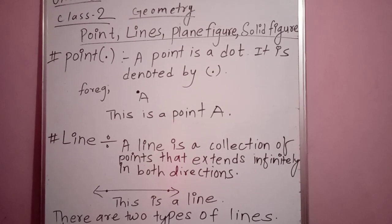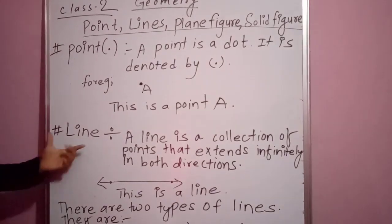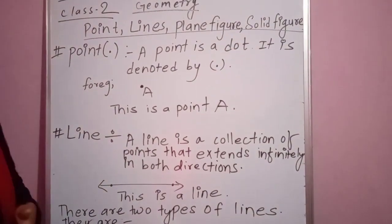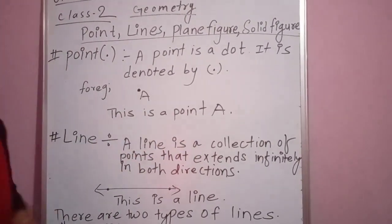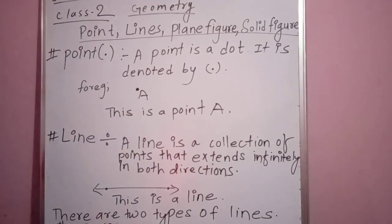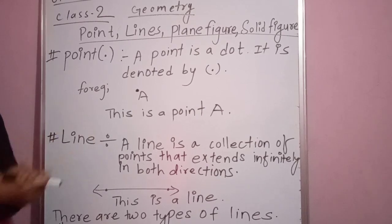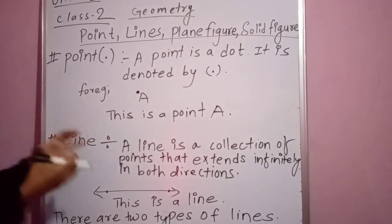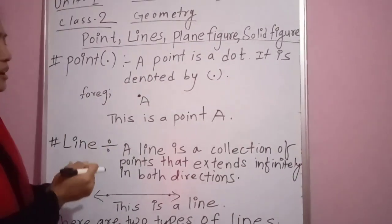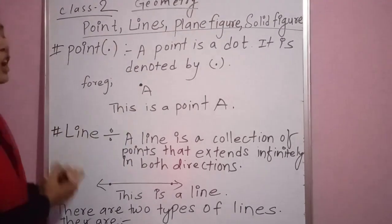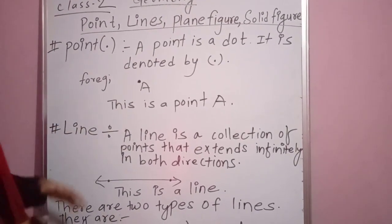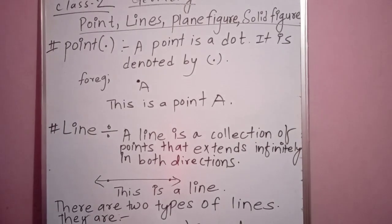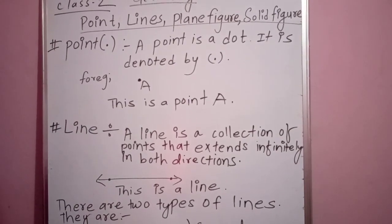Now the second topic is line. What does a line mean? A line is a collection of points. Line means points — it is a collection of points. When points collect and collect, you can find a line.